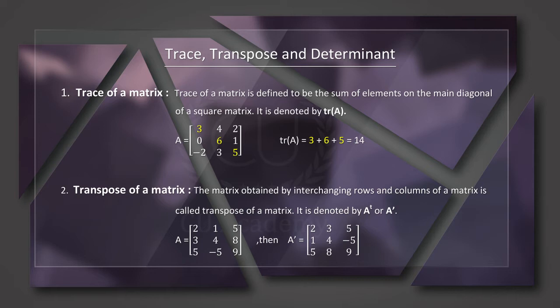The diagonal elements are defined to be those along the top-left to bottom-right direction. In this square matrix, the diagonal elements are 3, 6, and 5. So the diagonal elements are 3, 6, and 5.